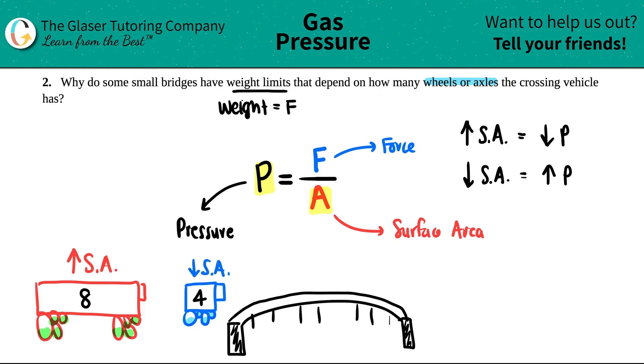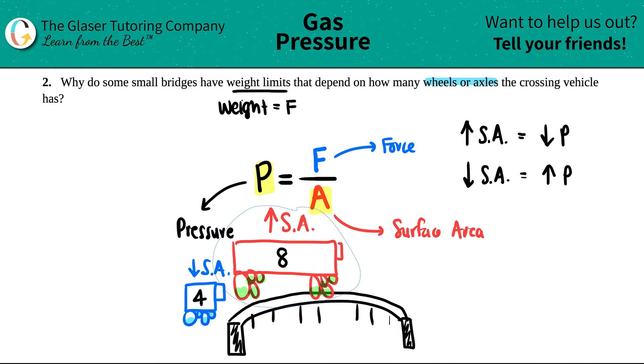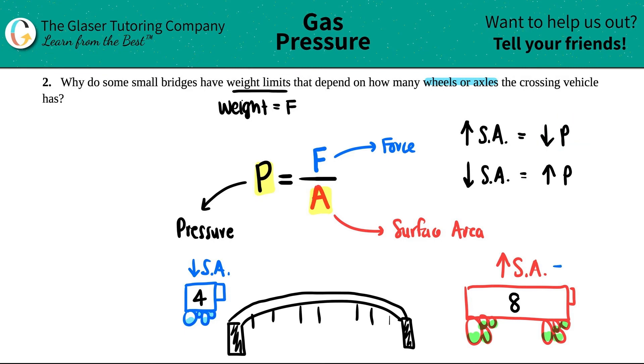So when the big truck with the greater surface area comes along and tries to go across the bridge, it's fine because with the higher surface area, the lower the amount of pressure that it puts out. This truck, however, that doesn't have as great of a surface area, when he tries to ride over the bridge—oops—it might split.